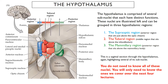Then we have the tuberal region, which is a series of distinct nuclei that sit above the infundibulum. The infundibulum is at the very base of the hypothalamus, and it's where the stalk of the pituitary gland connects to the brain. Then we have in green the mammillary region, which sits just above the mammillary body. It's called the mammillary region because it kind of looks like breasts — these areas were defined by old anatomists in the mid-1800s.